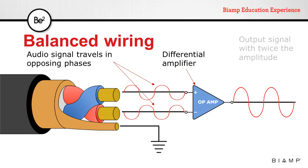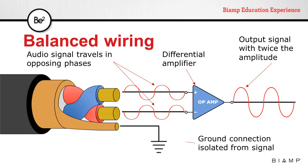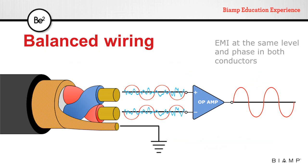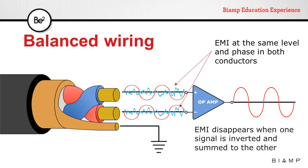At the input stage, we use a differential amplifier. This differential amplifier will flip one of the signals and then sum it to the other one. The resulting output will have twice the amplitude of the inputs, as we're summing those signals in phase. The shield is connected directly to ground and is isolated from the audio signal. Electromagnetic interference can affect this cable the same way it can affect unbalanced wiring, but the difference is that it will affect both internal conductors the same way, so the same noise signal will appear on both conductors.